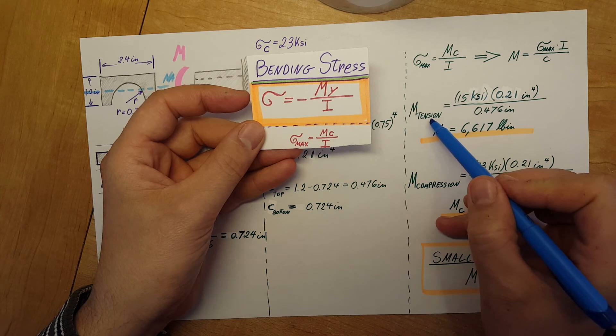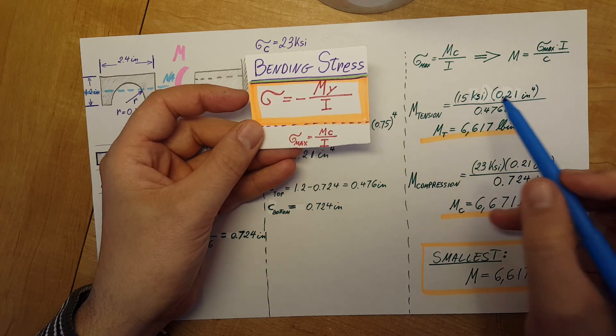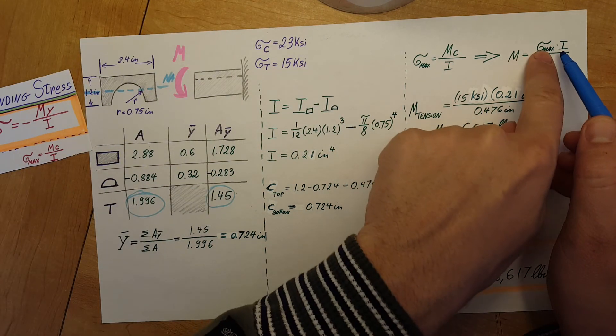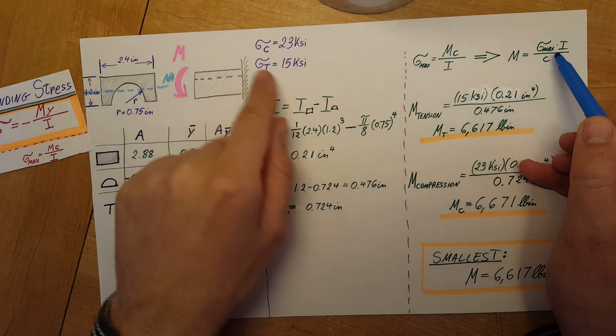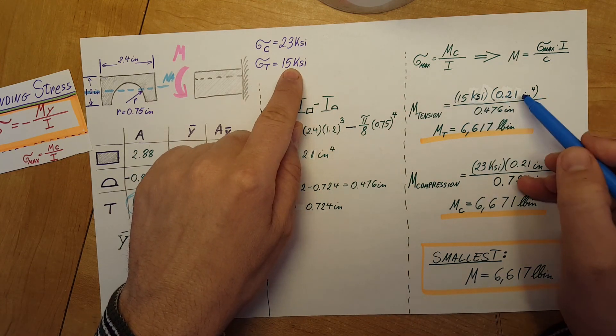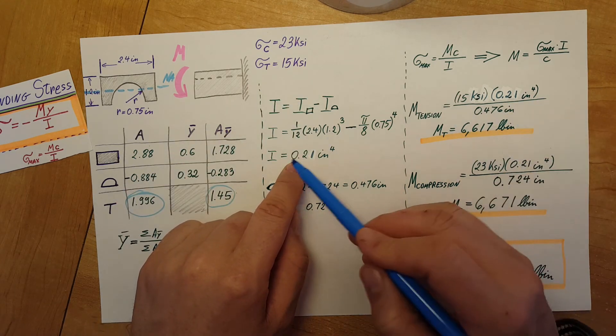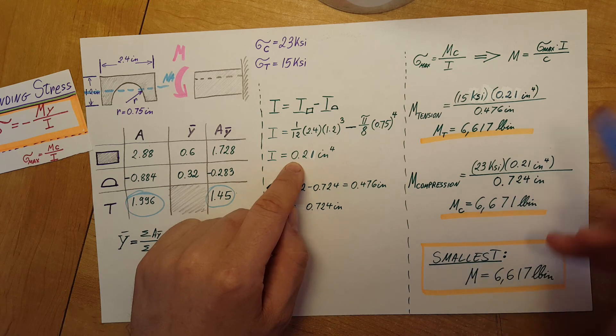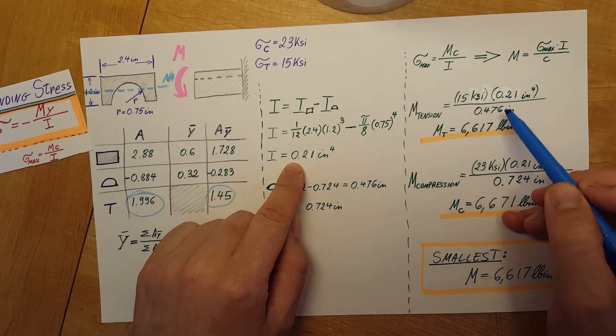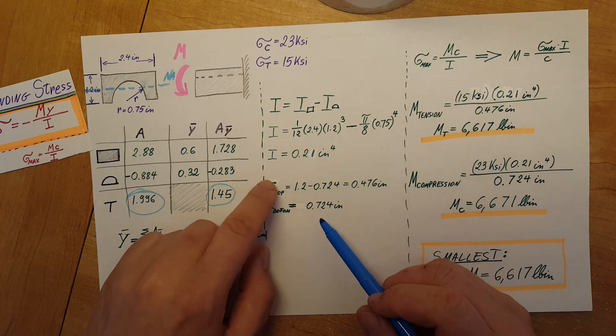For tension, we'll take this formula for M and plug in the values we need. The maximum stress for tension was given as 15, so we plug that in, times I - which will be the same for both occasions - what we found here, divided by C.